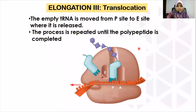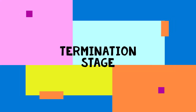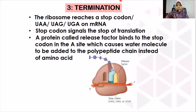To summarize elongation, there are three steps: codon recognition, peptide bond formation, and translocation. The third stage in translation is termination.